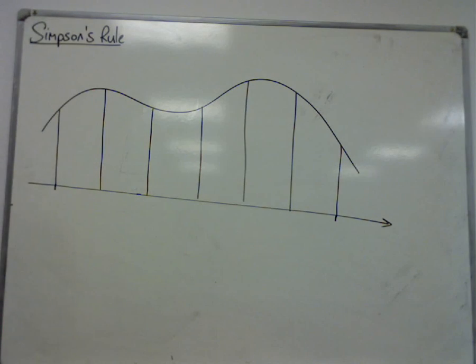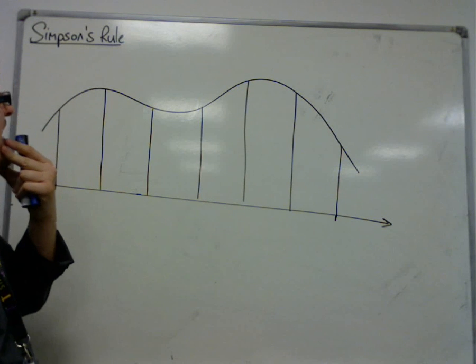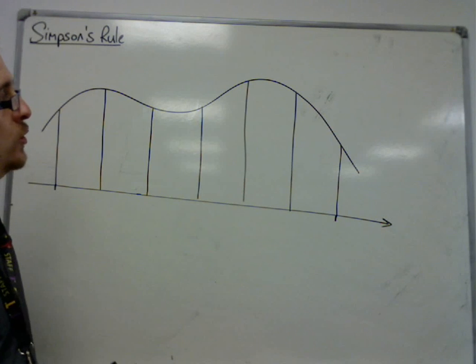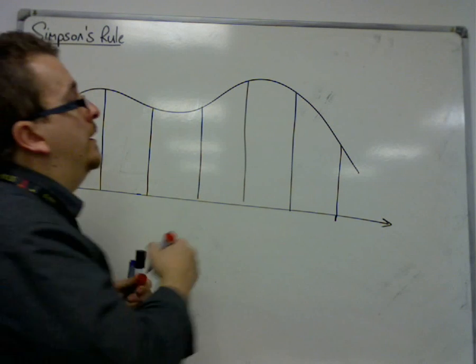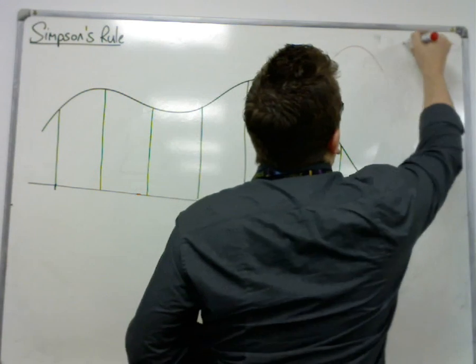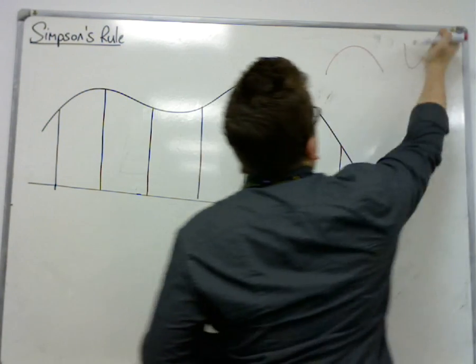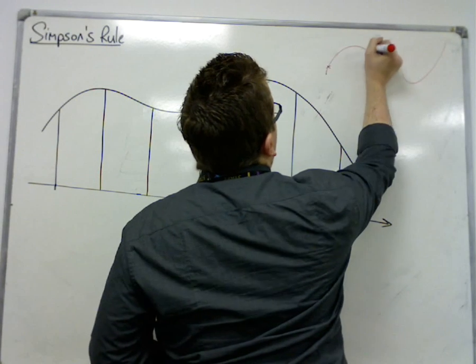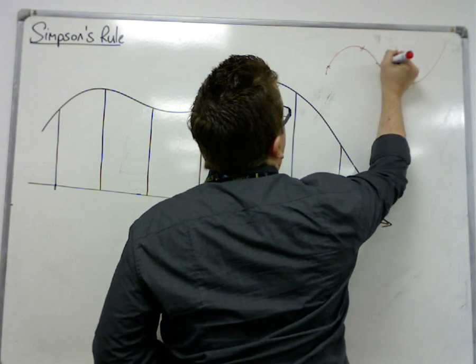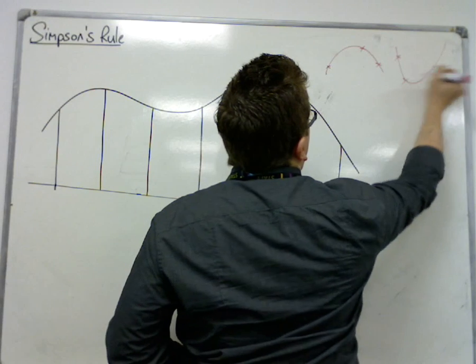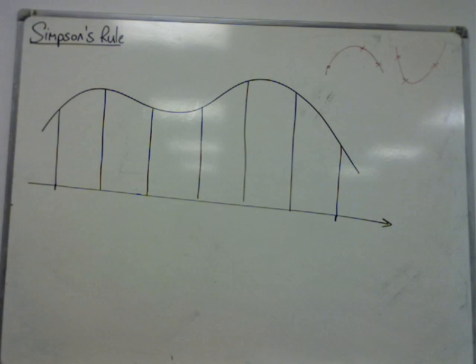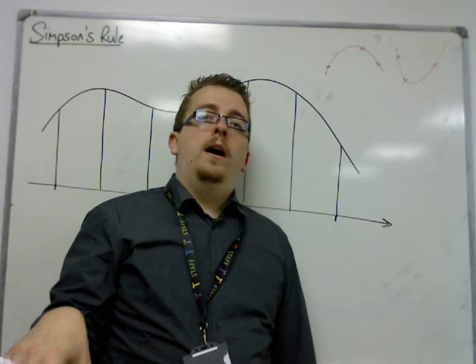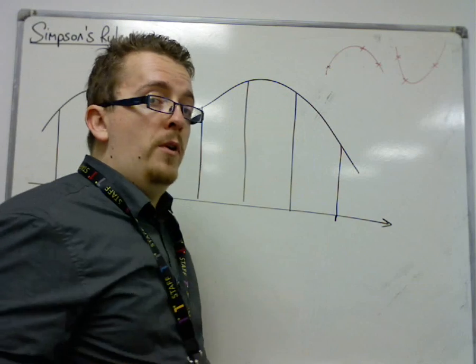So Simpson's rule, well, he came up with this idea of approximating the curve using quadratics, using parabolas. To define a parabola, all you need are three points.